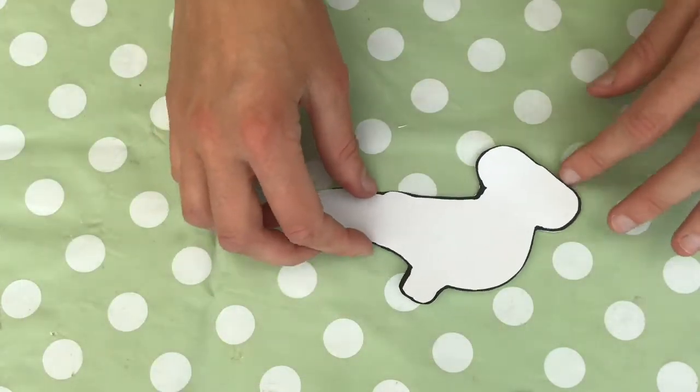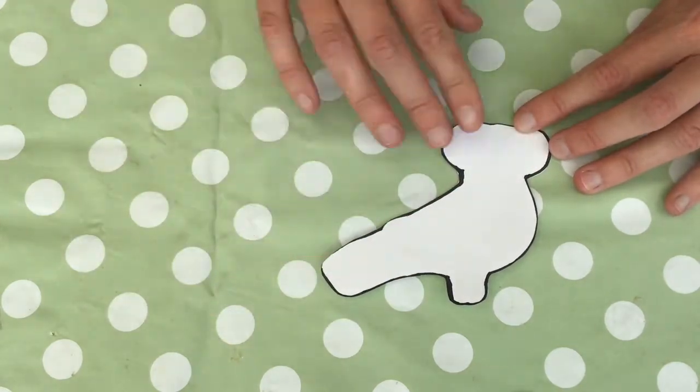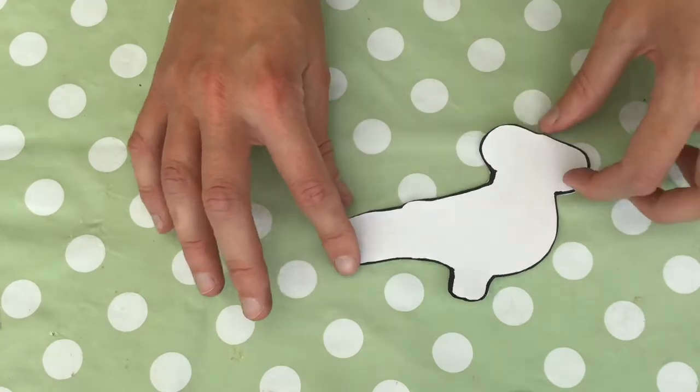I've decided to create an owl brooch like the Roman goddess Minerva, the goddess of wisdom, which is why I've cut out this template here.